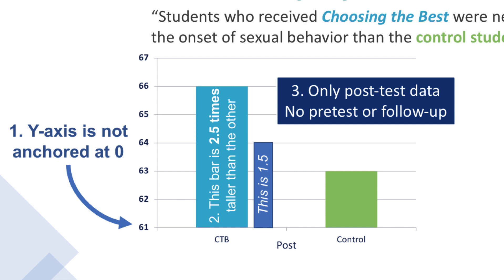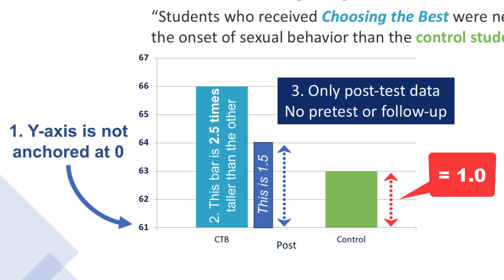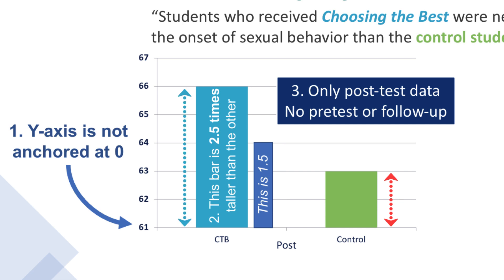If you look at the size of the difference between these bars — here's our control group, we'll consider that as 1. What would be 1.5? I represented it with a darker blue bar — that's the height of 1.5. And yet this lighter blue bar is 2.5 times taller than the green bar, even though the text says there was only a 1.5 times difference between these bars.